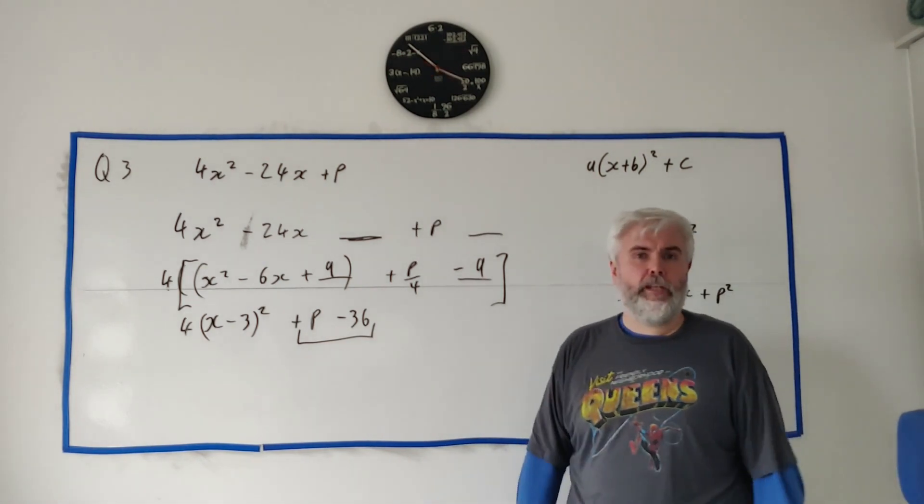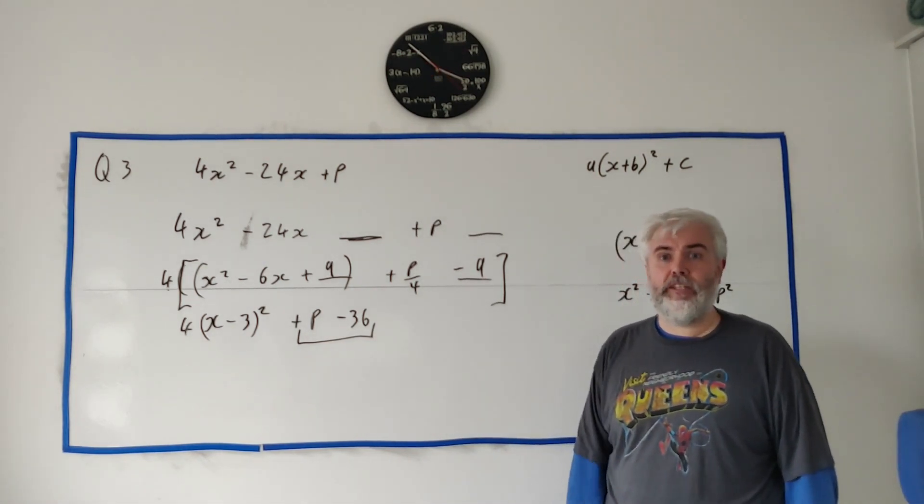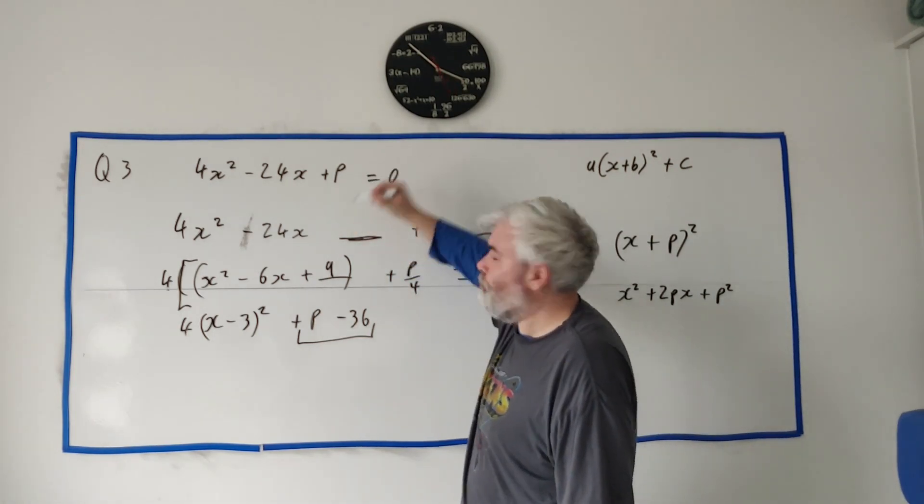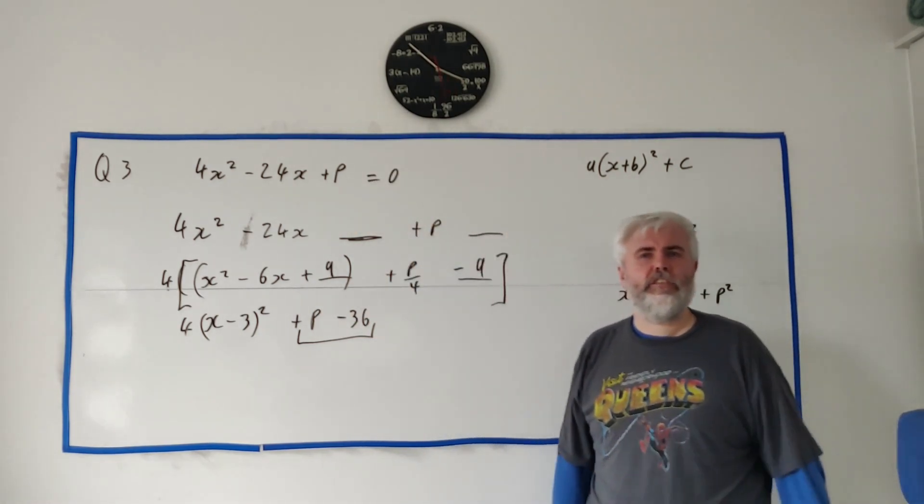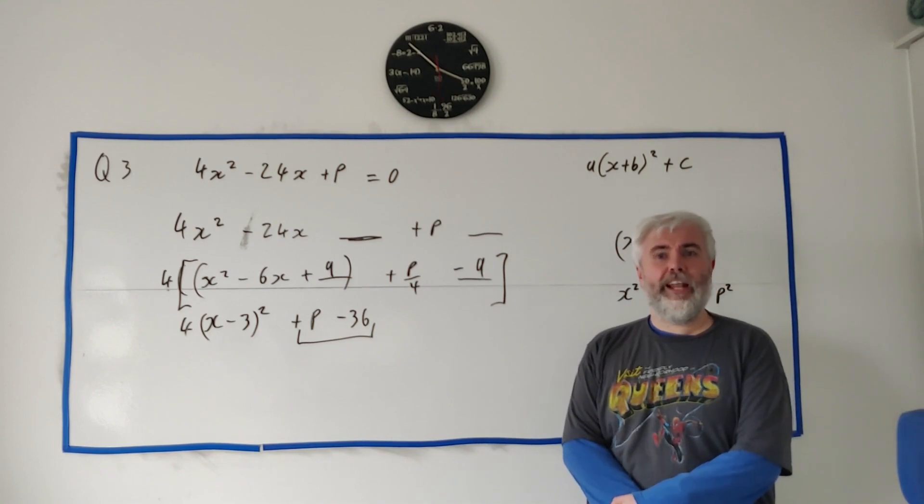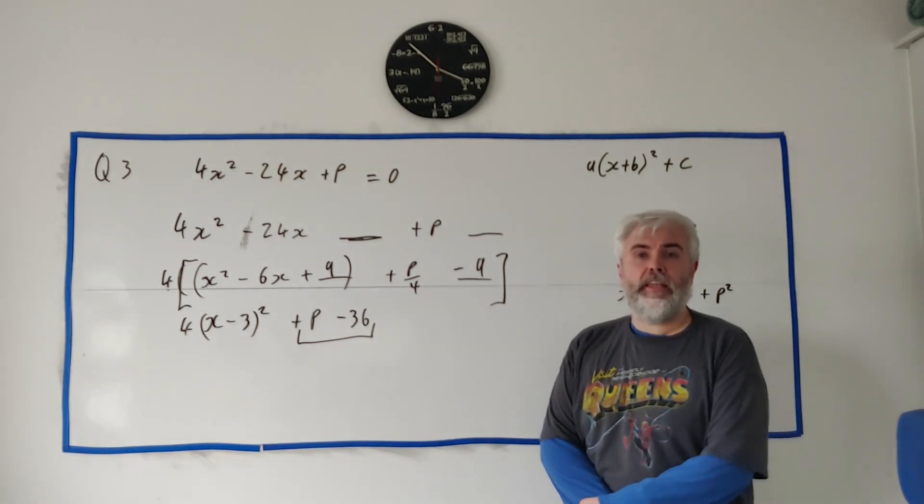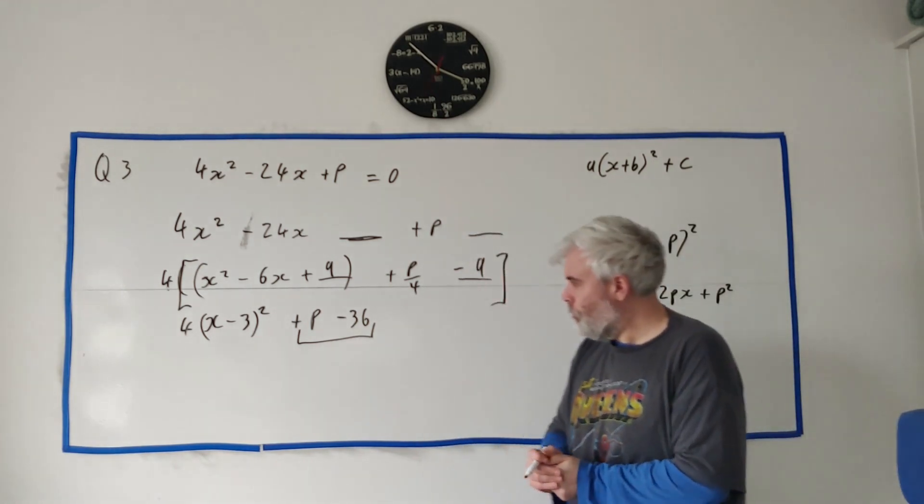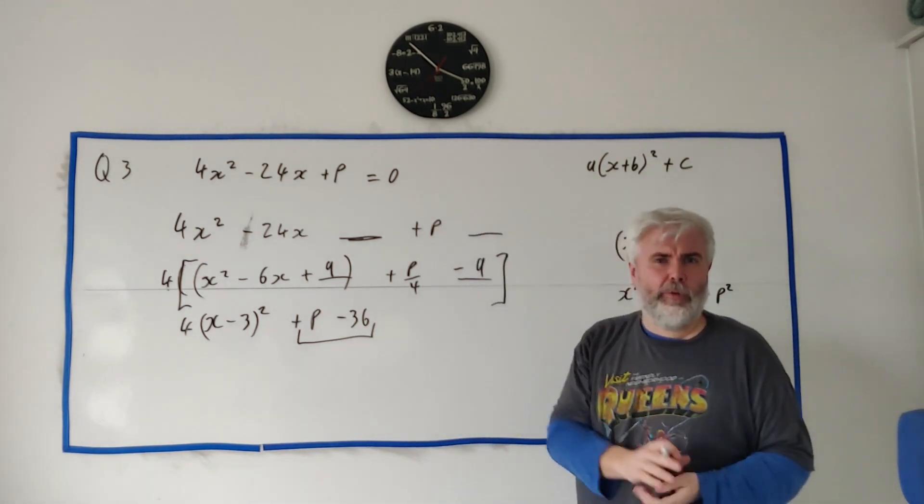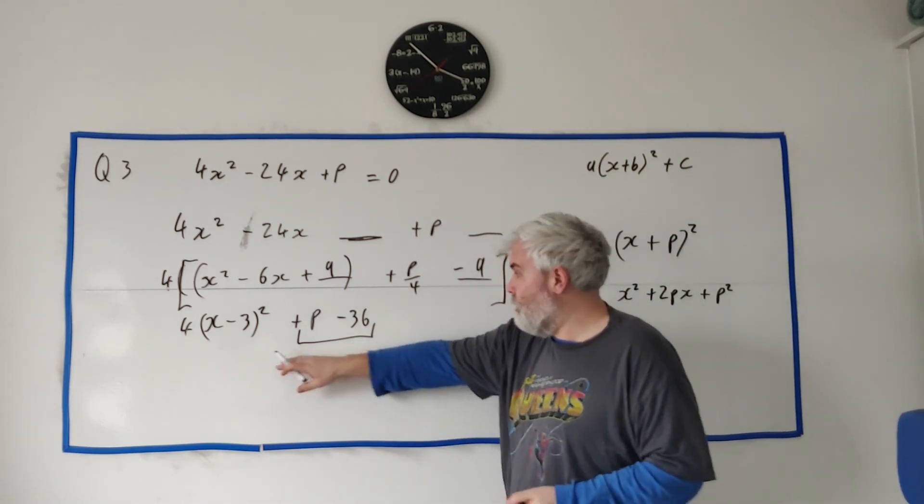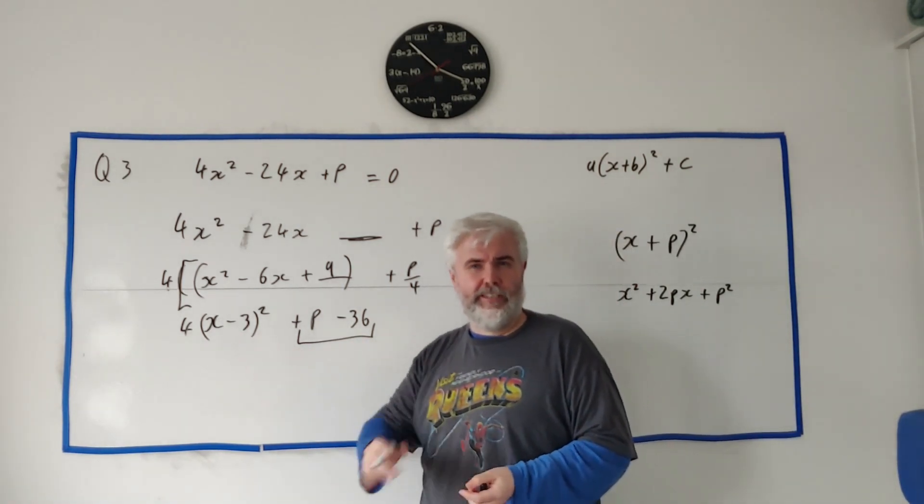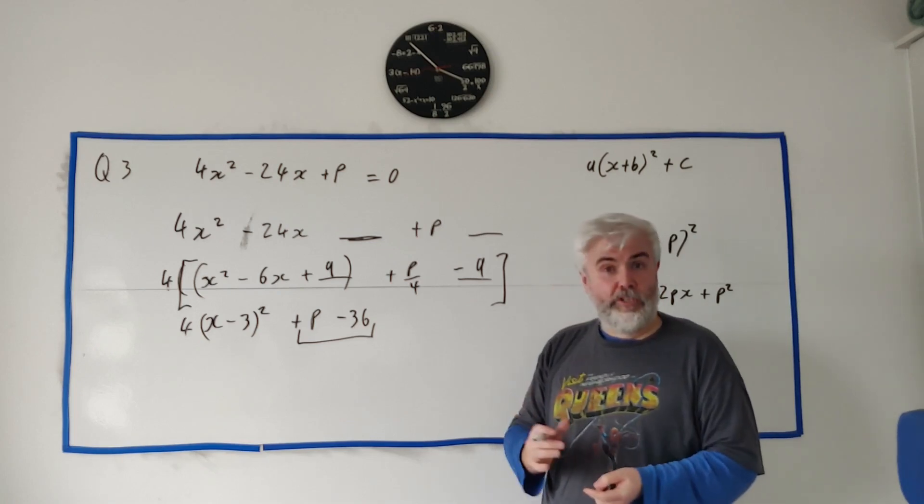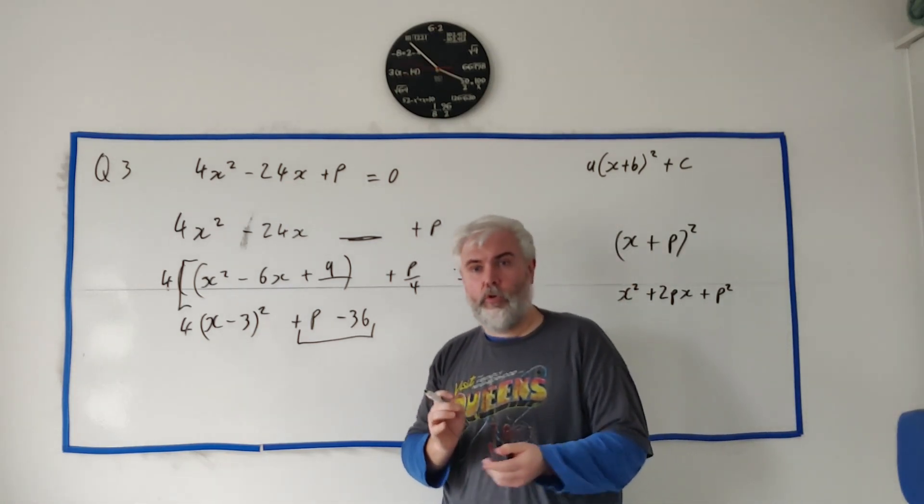But we're not quite finished. They have a part b to this question. They basically put this equals to 0. And they ask us, what values for p has no real roots? So they say hence or otherwise. That means we're going to use this answer here to make this quite easy. You can also see there's only one mark for this question, so it should be something that's quite short and quick to do.